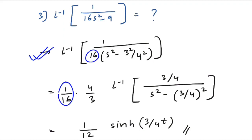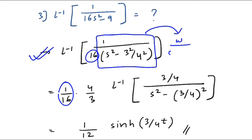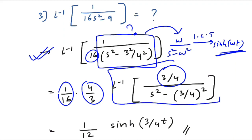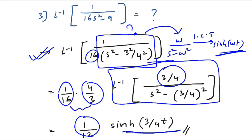With 16 factored out, 9/16 can be written as (3/4)². Take the constant 1/16 outside, and the remaining part is Laplace inverse of 1/(s²−(3/4)²). The standard result is: Laplace of sinh(ωt) = ω/(s²−ω²). Since ω=3/4 is not in the numerator, multiply and divide by 3/4. The final answer is (1/16)·(4/3)·sinh(3t/4) = (1/12)·sinh(3t/4).